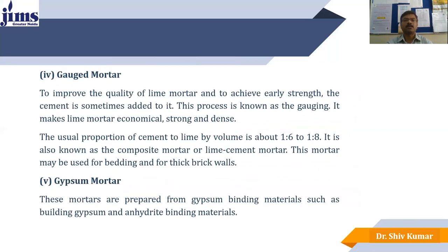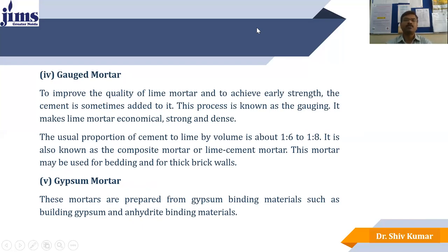To improve the quality of lime mortar and achieve early strength, cement is sometimes added to it. This process is known as gauging, and it makes lime mortar economical, strong, and dense. The proportion of cement to lime is about 1:6 or 1:8. This is also known as composite mortar or cement-lime mortar and may be used for bedding and thick brick walls.